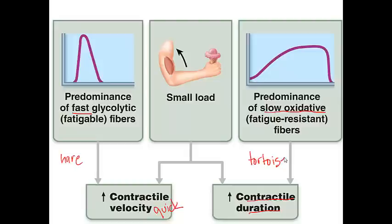Thinking back to the old fable of the tortoise and the hare: the hare finishes the race very quickly — that would be the fast glycolytic fibers — while the tortoise continues to contract for the entire race, representing the slow oxidative types of fibers.